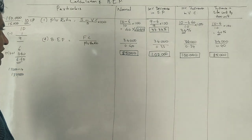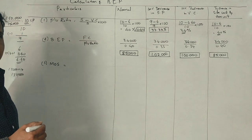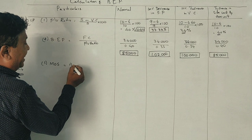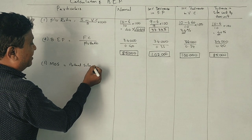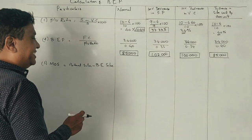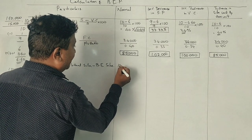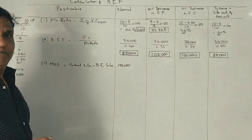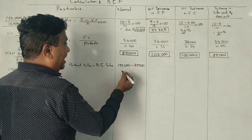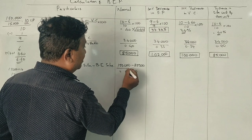Margin of safety formula: actual sales minus break-even sales. In the first case, actual sales from the question are 1,50,000 minus break-even sales 85,000, which equals 65,000 margin of safety. This is answer one.